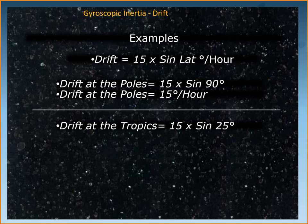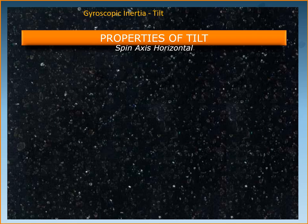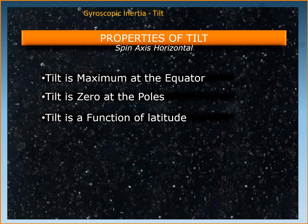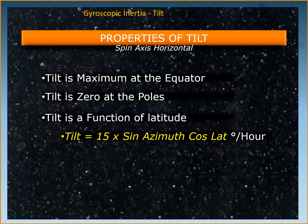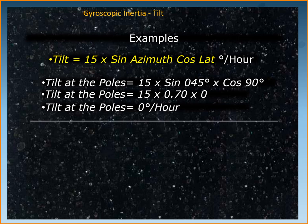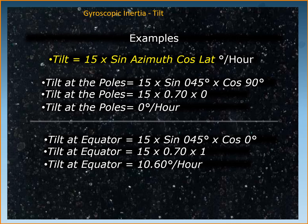Drift starts to reduce as you come down from the poles towards the equator. Similarly, tilt is the movement of the gyroscope axis around the vertical plane and is maximum at the equator, reducing as you go towards the poles, becoming zero at the poles. Tilt is also a function of latitude: tilt equals 15 × sine(azimuth) × cos(latitude), in degrees per hour. For example, tilt at the poles = 15 × sin(azimuth) × cos(90°) = 0, whereas tilt at the equator can be a maximum of approximately 10.60 degrees per hour.